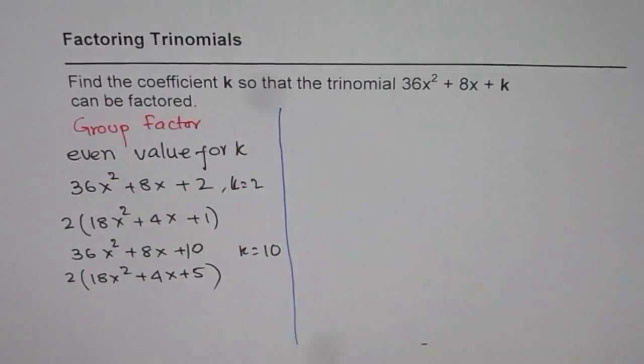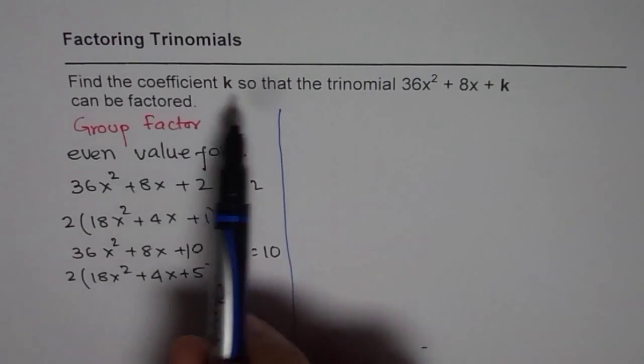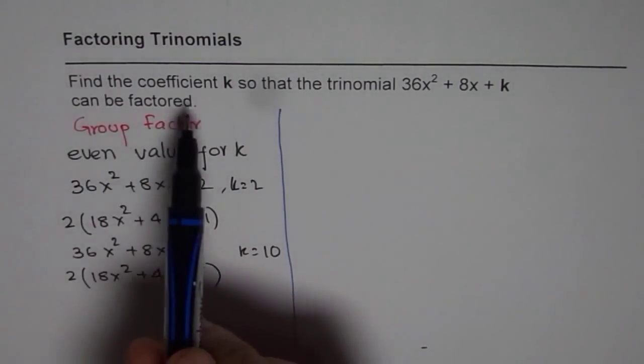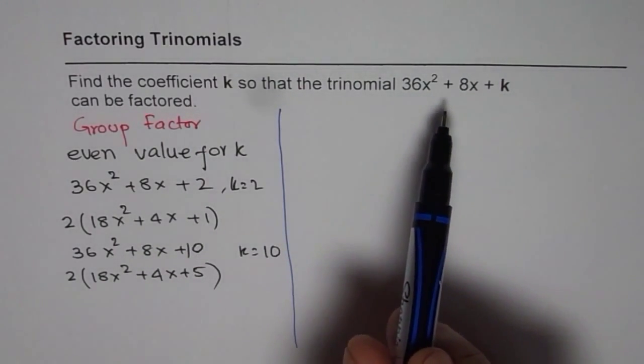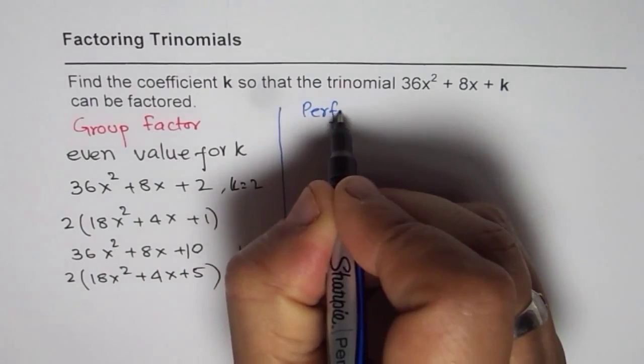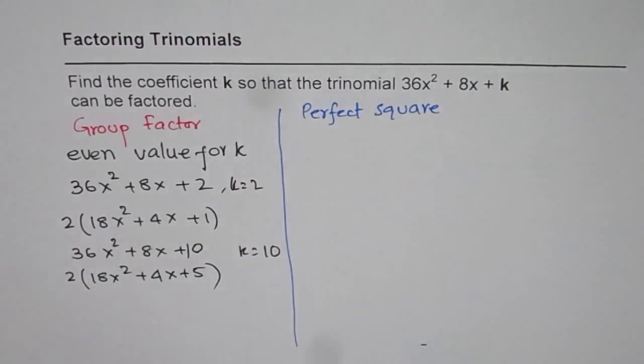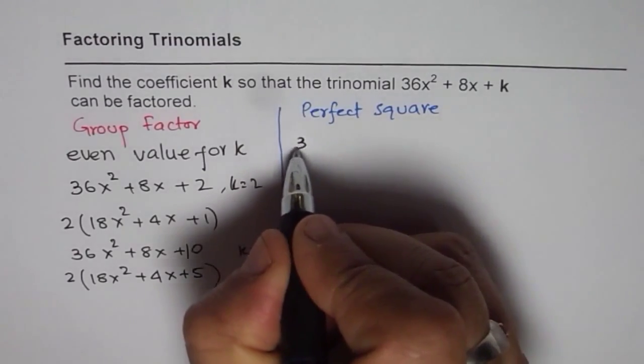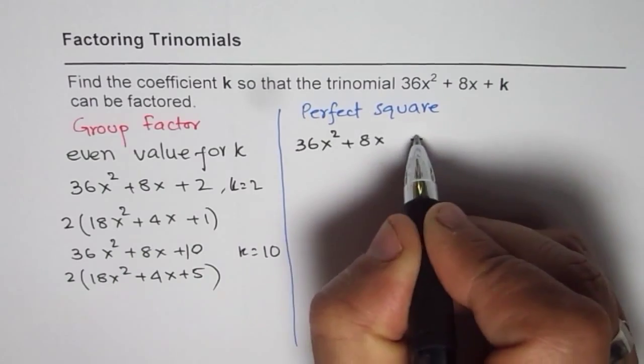Sometimes we can add or qualify this statement with some conditions. And that is we say find the coefficient k so that the trinomial 36x² + 8x + k can be factored as a perfect square. Now that is another way of factoring. So you have to make it as a perfect square. Basically if you get this kind of equation then we have 36x² + 8x + k.